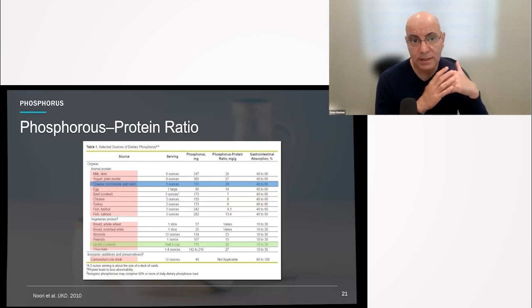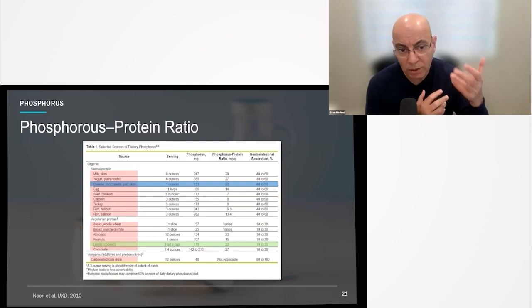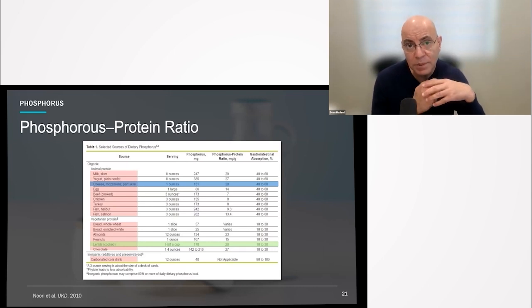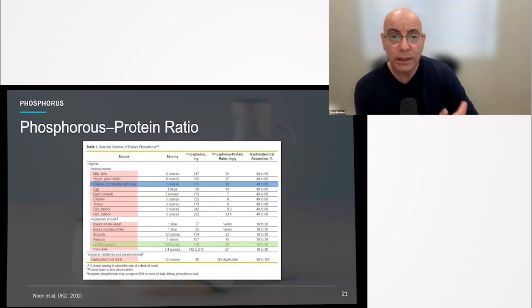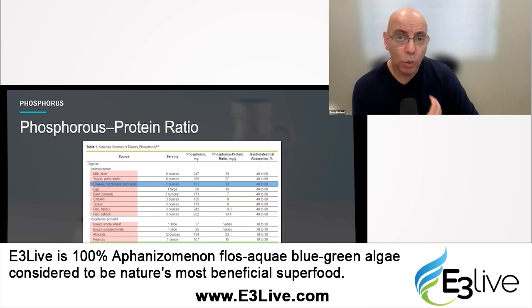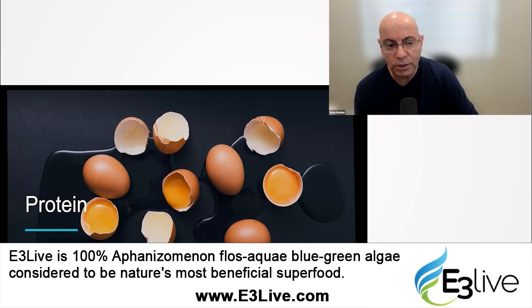Lentils would be a much better option because lentils would have substantially lower absorption of phosphorus than cheese would. As a result, you're looking at a much better option. So once again, even if you're on dialysis, what we're talking about is looking more at plant-based options, specifically because you're going to have better outcomes from all of the things we've talked about.